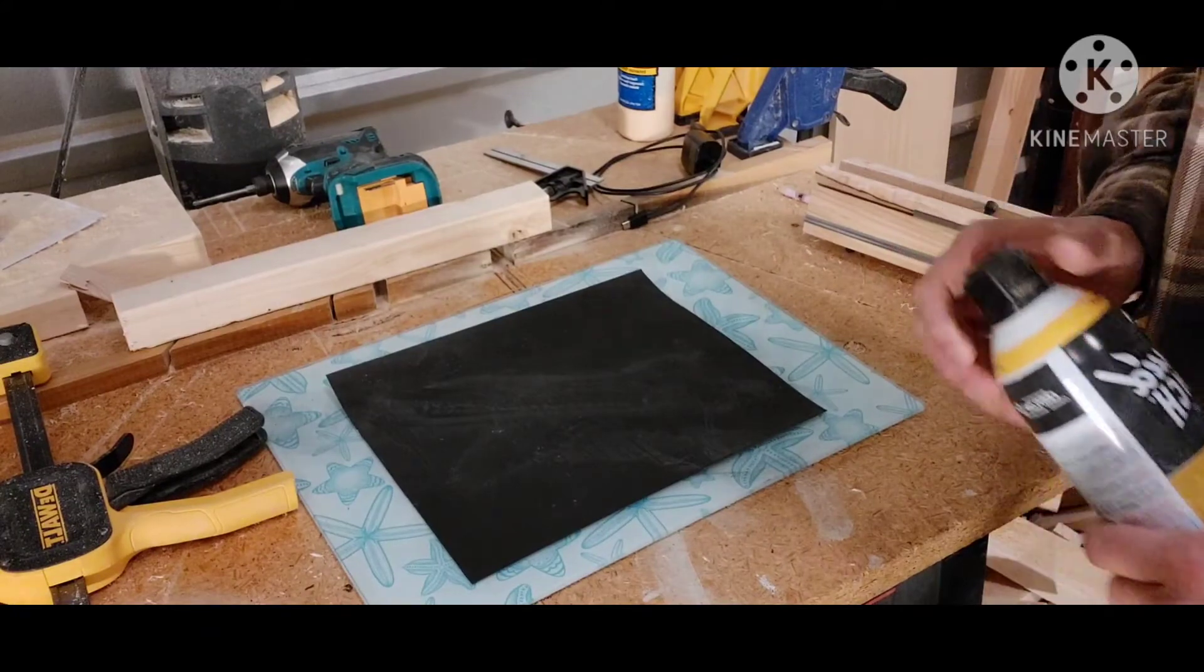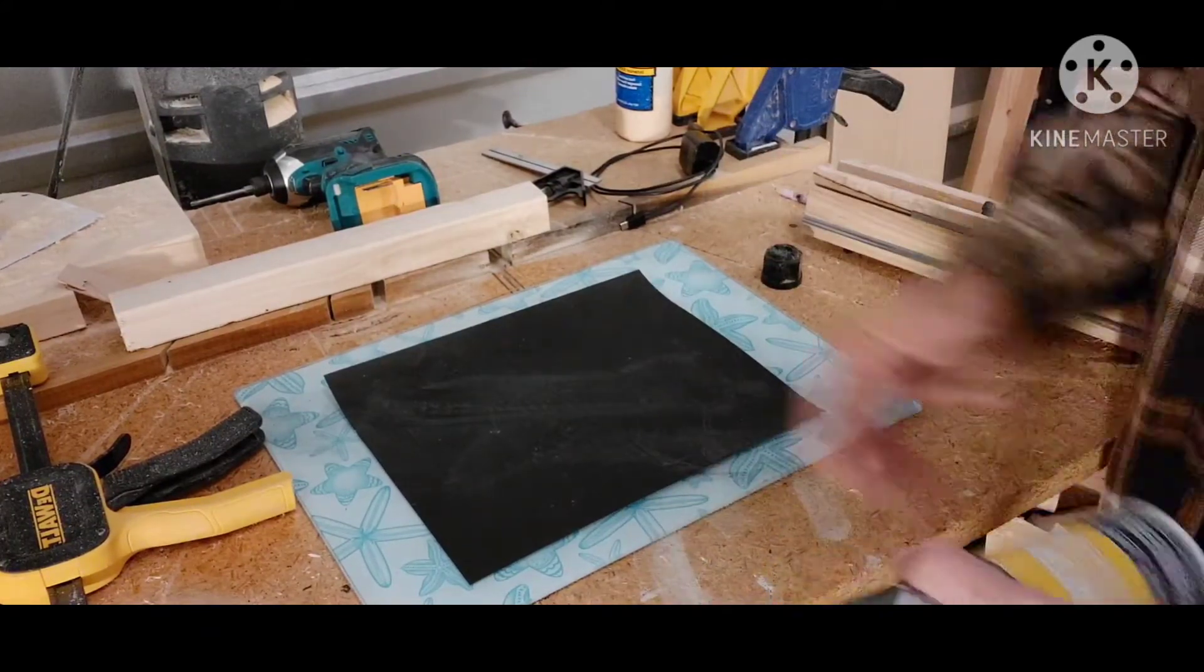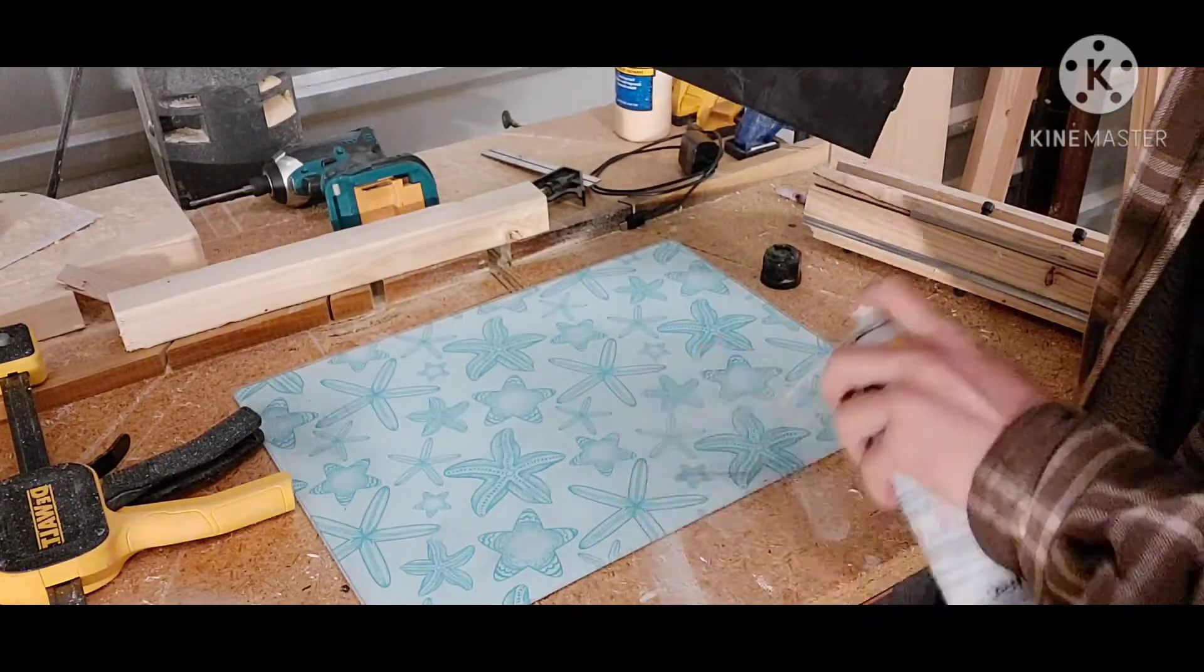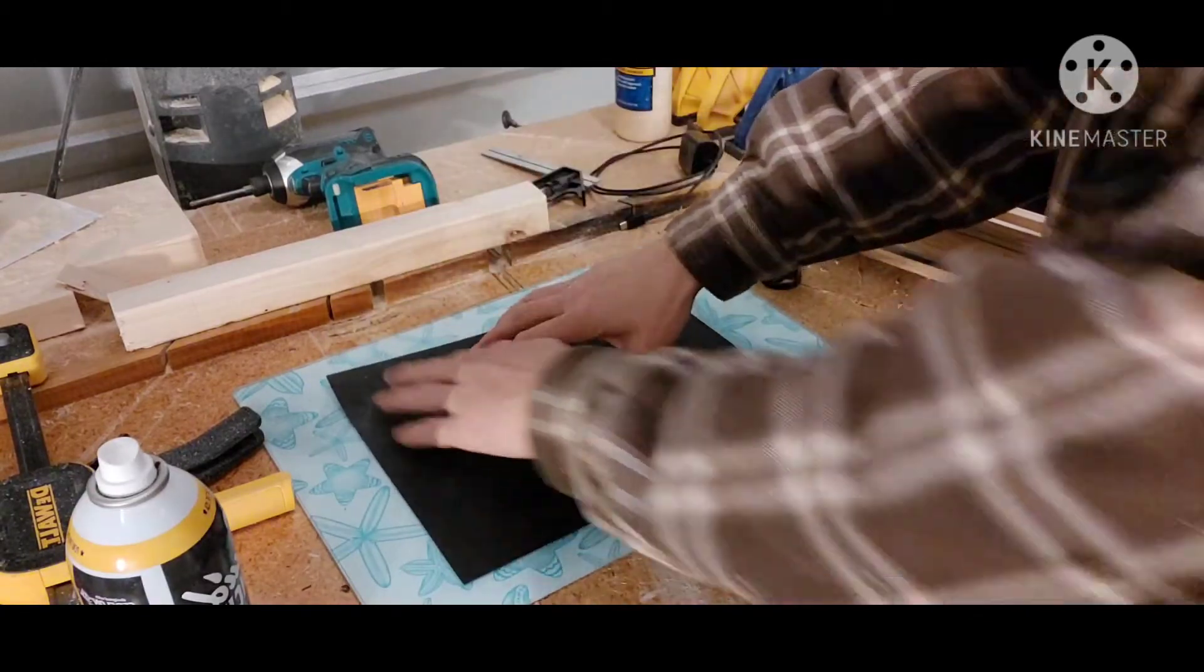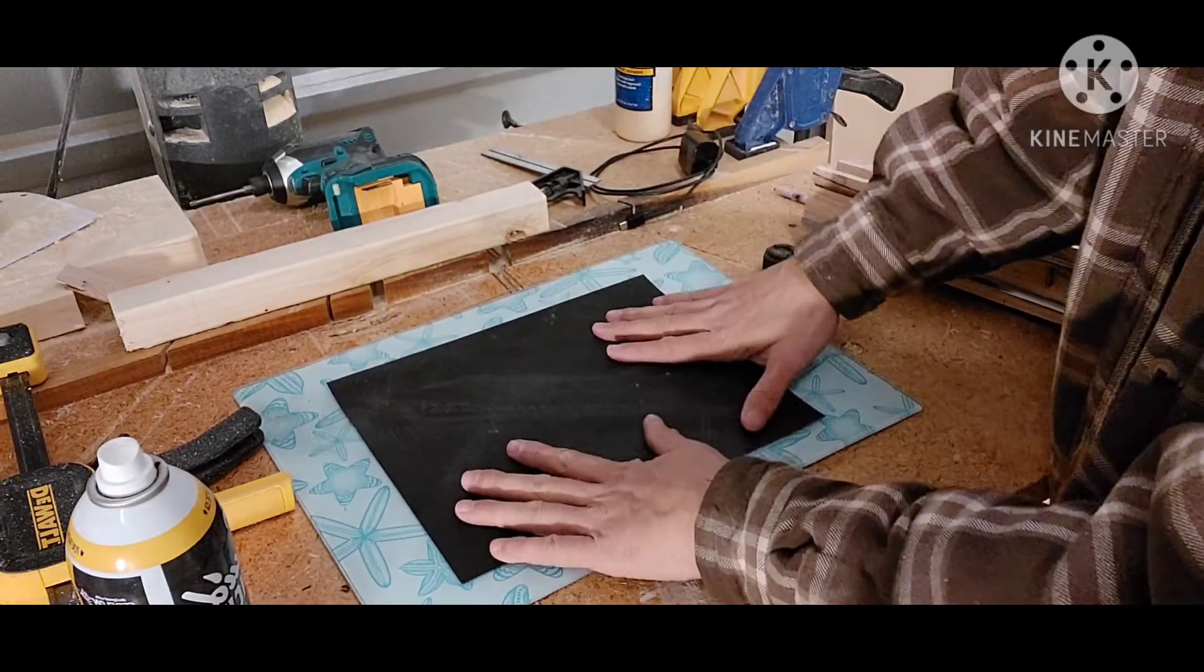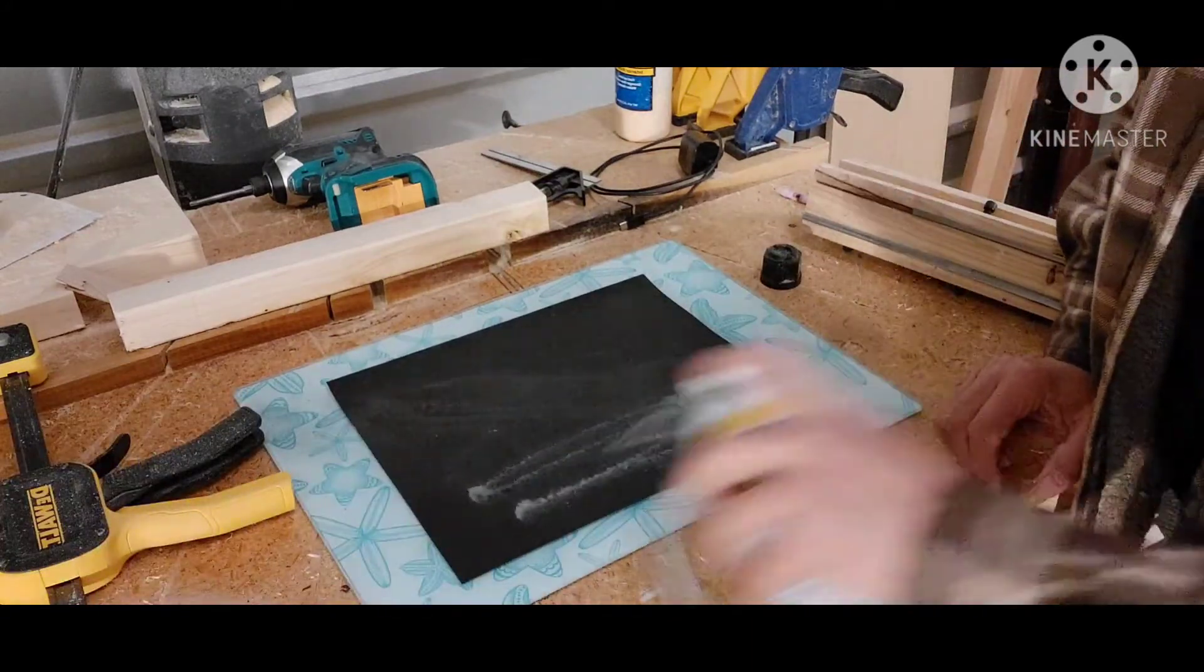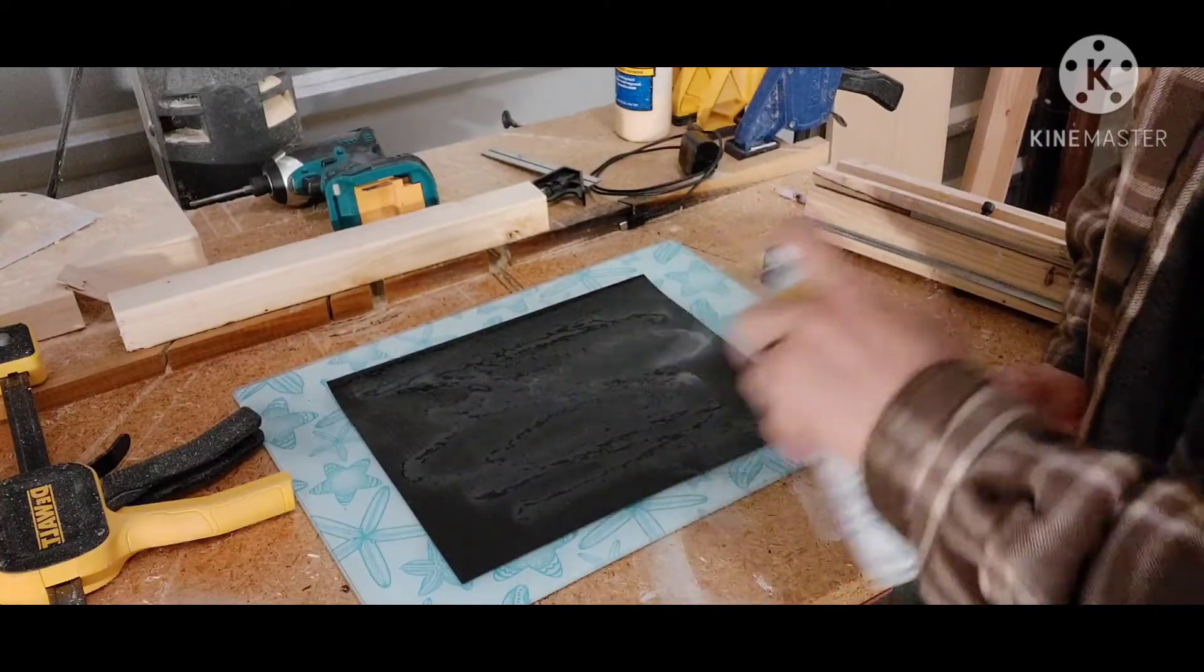So what I do here is take some penetrating oil and I spray down. It's a glass cutting board. I spray it down a little bit, and then the paper will stick to the cutting board pretty nicely. Then I take a little bit more and lubricate the sandpaper.